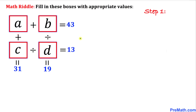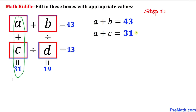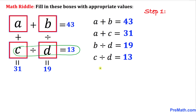Here is our very first step — let's go over this math problem once again. A plus B is equal to 43. A plus C equals 31. B divided by D equals 19. And finally, C divided by D equals 13.